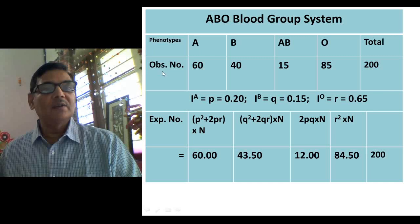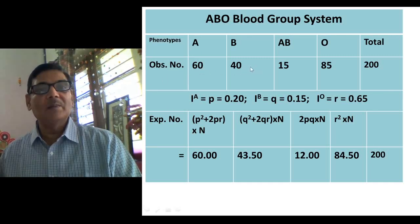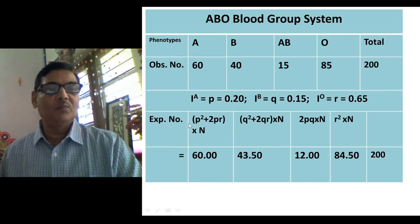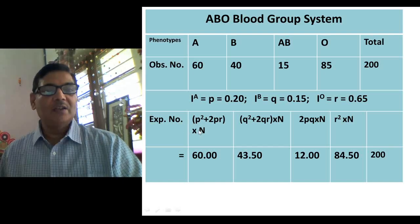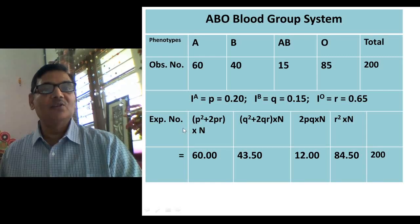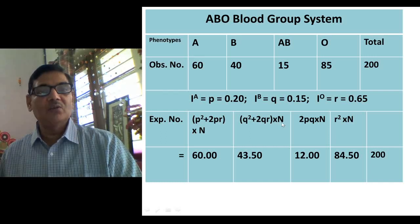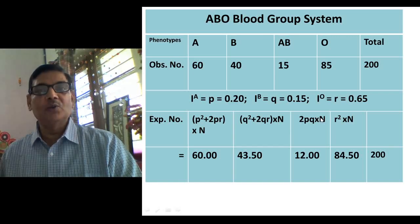You can also calculate the expected number of individuals for each blood group. Using (P² + 2PR) × N for blood group A, (Q² + 2QR) × N for B, 2PQ × N for AB, and R² × N for O, where N = 200. The expected number for A comes to 60, for B it is 43.50, for AB it is 12, and for O it is 84.50.